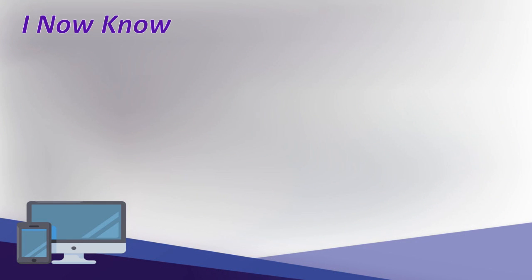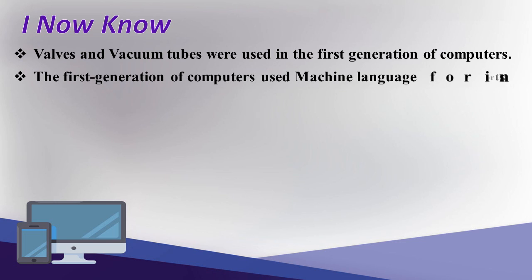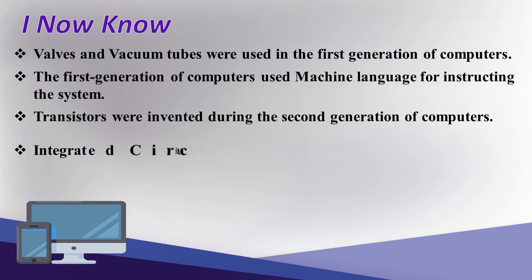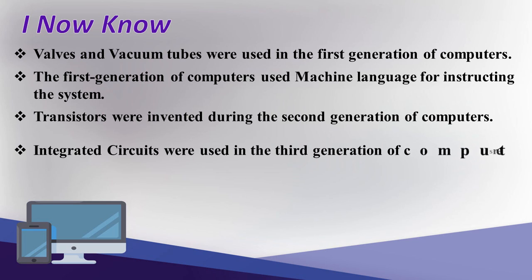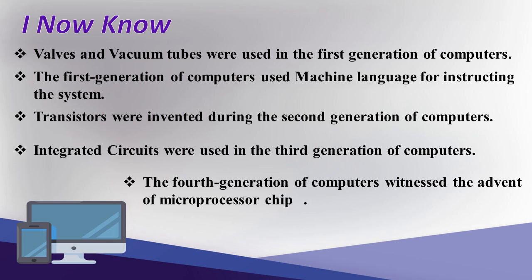I now know: Valves and vacuum tubes were used in the first generation of computers. The first generation used machine language for instructing the system. Transistors were invented during the second generation of computers. Integrated circuits were used in the third generation of computers. The fourth generation of computers witnessed the advent of microprocessor chips.